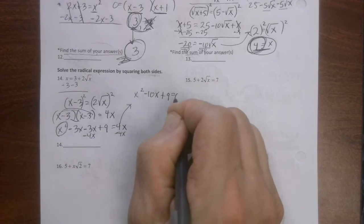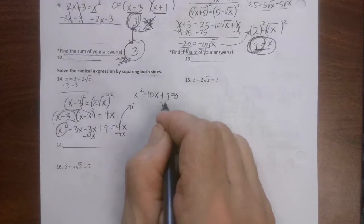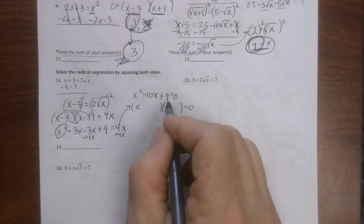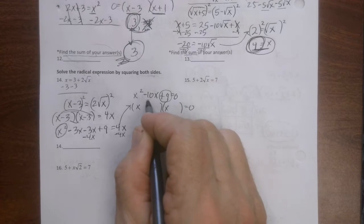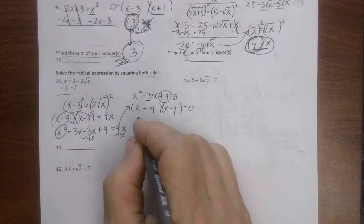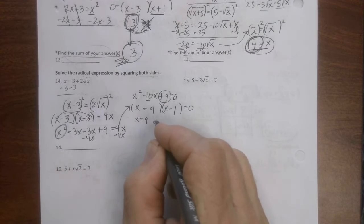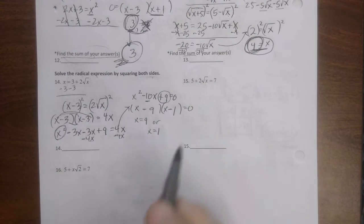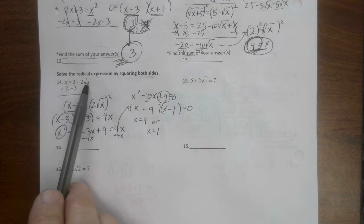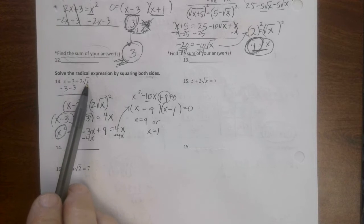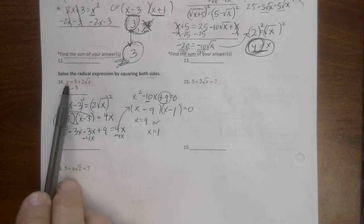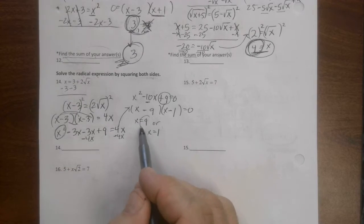And wouldn't you know it, it's factorable. So what are two factors of positive nine that add up to negative ten? Minus nine minus one. So x equals nine or x equals one. Don't you dare just put those down as your answers. You got to plug them back in. What's the square root of nine? Three. Three times two is six. Six plus three equals x, which is nine. Nine equals nine. This is a winner.